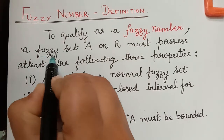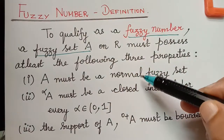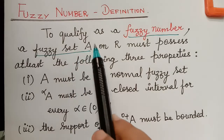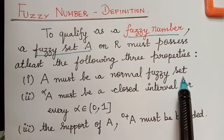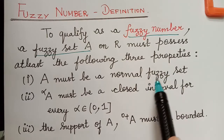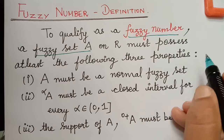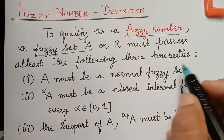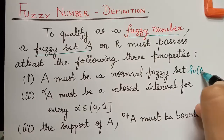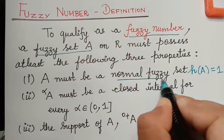A fuzzy set capital A is said to be a fuzzy number if it satisfies these three properties. The first property says that the fuzzy set A must be a normal fuzzy set. A normal fuzzy set is a set in which the height of the membership function will be equal to 1. That is, the height of that fuzzy set equals 1.